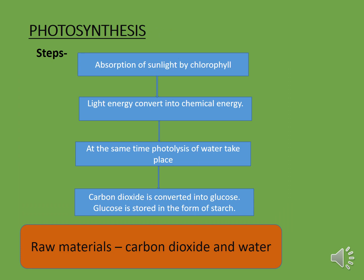What are the steps of photosynthesis? The first step is absorption of light by chlorophyll. The function of chlorophyll is to absorb solar radiations. Then the next step is that light energy will be converted into chemical energy, and at the same time there is photolysis. Photo means light, lysis means breakdown. So the breakdown of water in the presence of sunlight takes place, which results in the formation of glucose. The carbon dioxide will be converted into glucose, and glucose will be stored in the form of starch in plants.